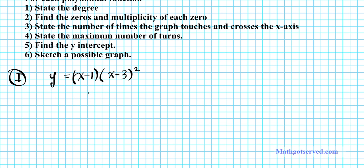Let's start with number 1: the degree of y. This is the factored form of the polynomial function. The degree of the first quantity is 1, and the degree of the second quantity is 2. When you expand completely, using the product property of exponents, you add the degrees: so the degree will be 3. In factored form, just sum the degrees of each factored component.